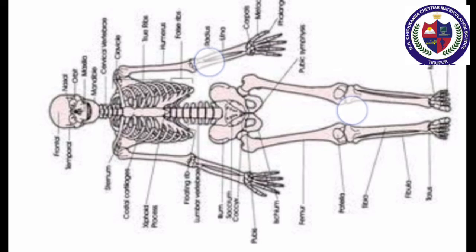Bones comprise the hard framework of the body. Cartilages are the supporting and connecting structures — for example, cartilage supports the projecting external ears and the tip of the nose. Ligaments bind the bones together.